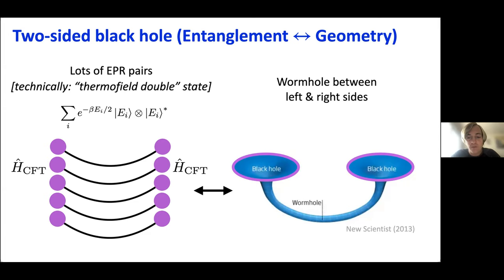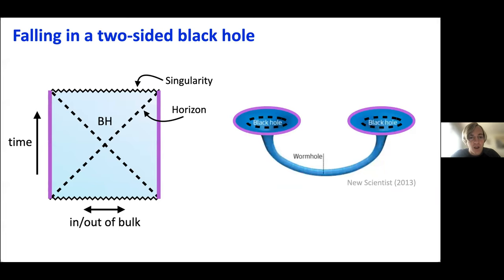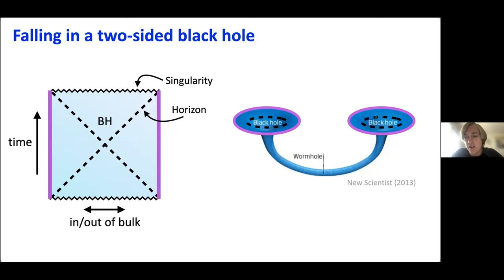Finally, I'd like to introduce some diagrammatic notation convenient for discussing particles traveling through the wormhole — known as Penrose diagrams. In these diagrams I collapse one of the spatial directions, keeping only one space direction on the horizontal axis, and adding a time direction moving upwards. My entire left quantum mechanical theory — this circle on the left side — is mapped to a single point on the time axis, and similarly the right system becomes a vertical line.